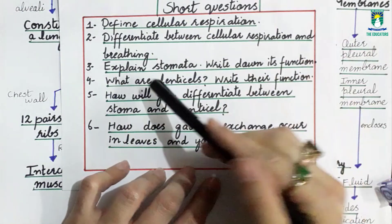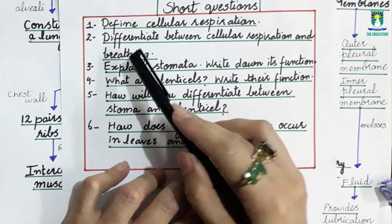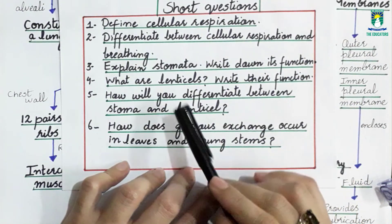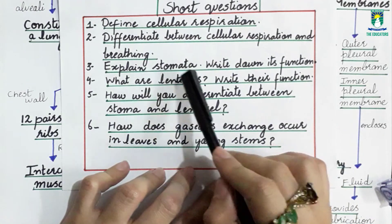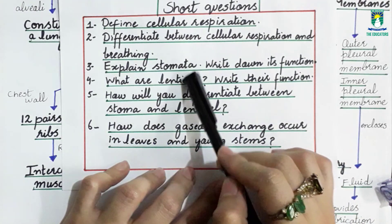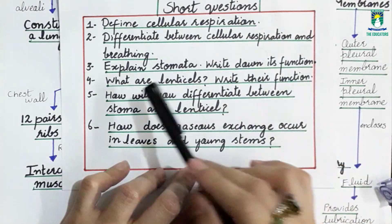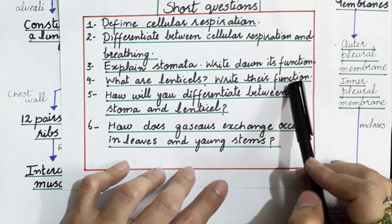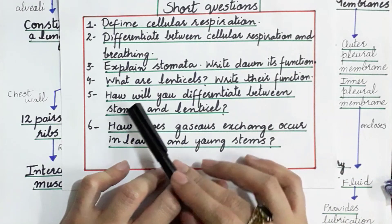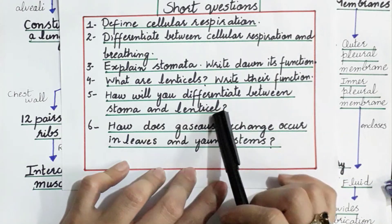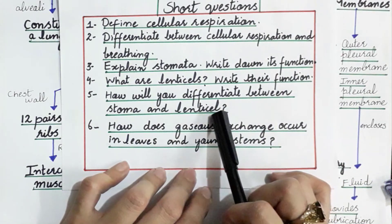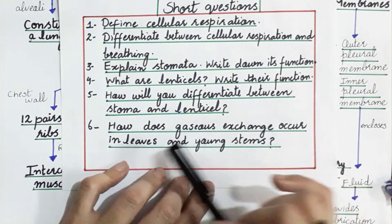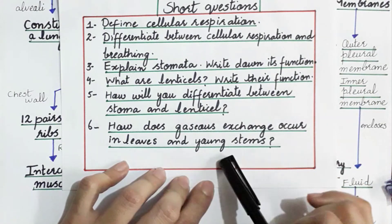Possible short questions include: Define cellular respiration. Differentiate between cellular respiration and breathing. Explain stomata and write down their function. What are lenticels — write their function. How will you differentiate between stomata and lenticels? And how does gaseous exchange occur in leaves and young stems?